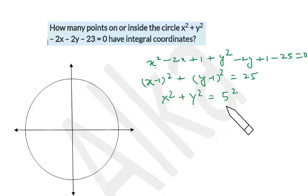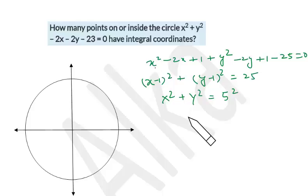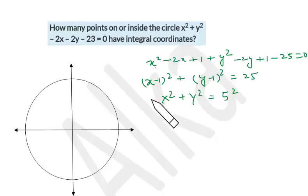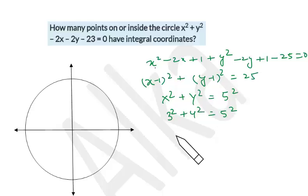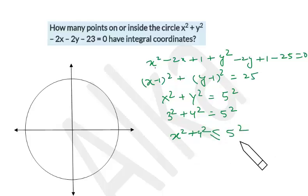Now, three types of questions can be framed based on integral coordinates: how many points are inside the circle, on the circle, or inside and on the circle. In this particular question it's on or inside. We know the Pythagorean triplet 3-4-5, so 3² + 4² = 5². We try to satisfy x² + y² ≤ 5² for the first quadrant only.